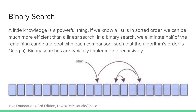If we know the elements in the collection are already in sorted order, we can do much better than linear order. In a binary search of sorted elements, we can eliminate half of all remaining candidate elements with every comparison, such that the algorithm's order is O(log N). With logarithmic order, we would have to double the number of elements in the collection to add a single comparison to the maximum number of comparisons to either find a target element or determine that it isn't in the collection.